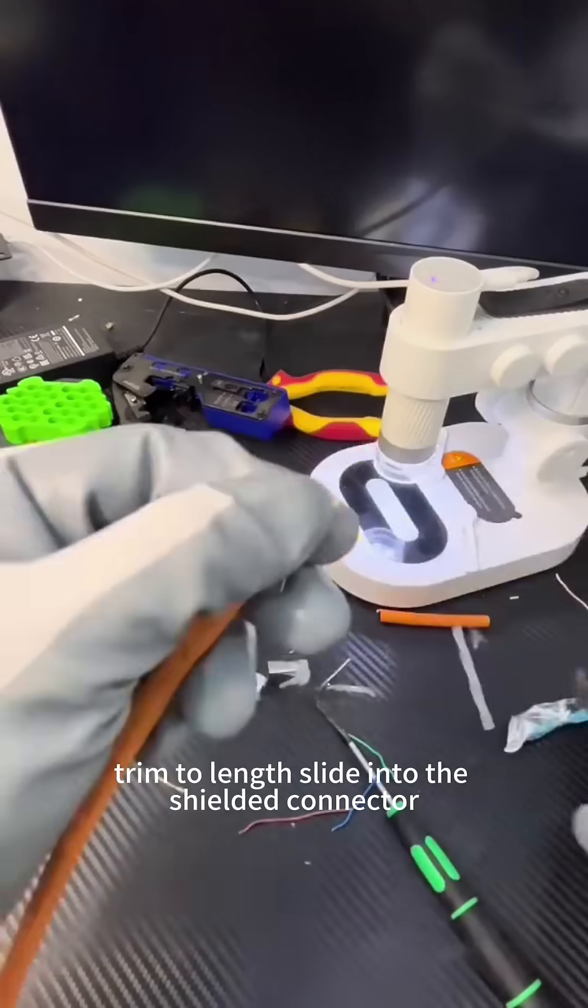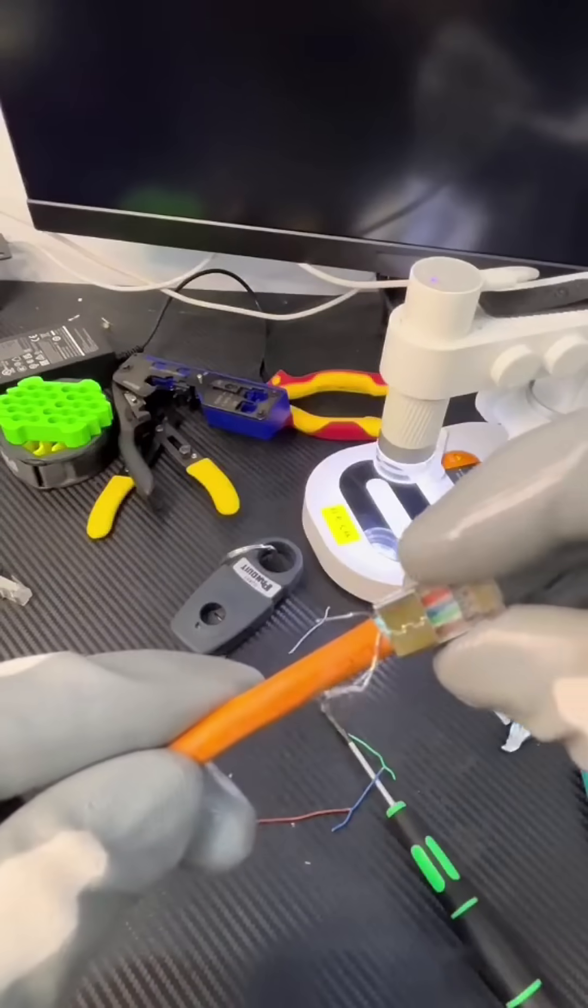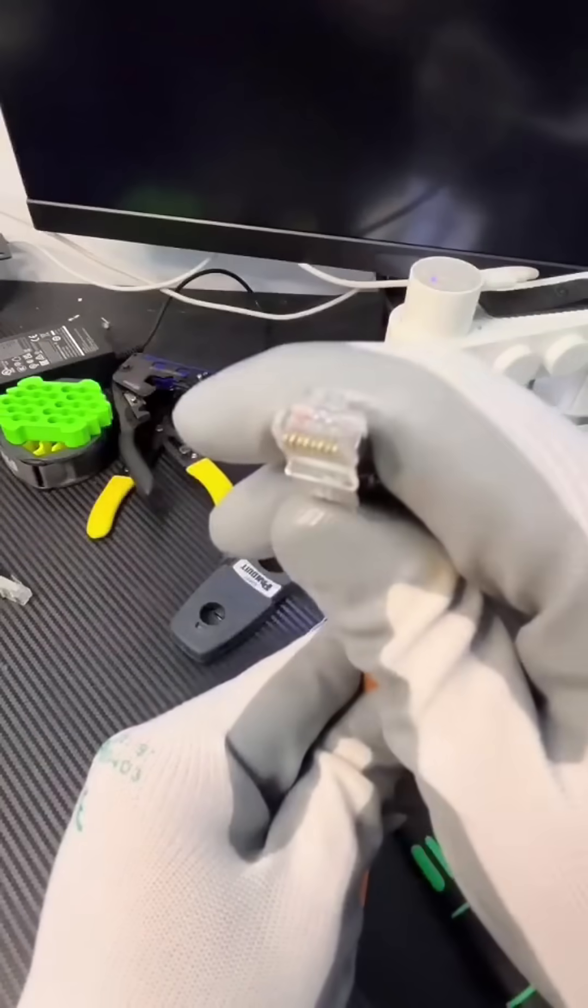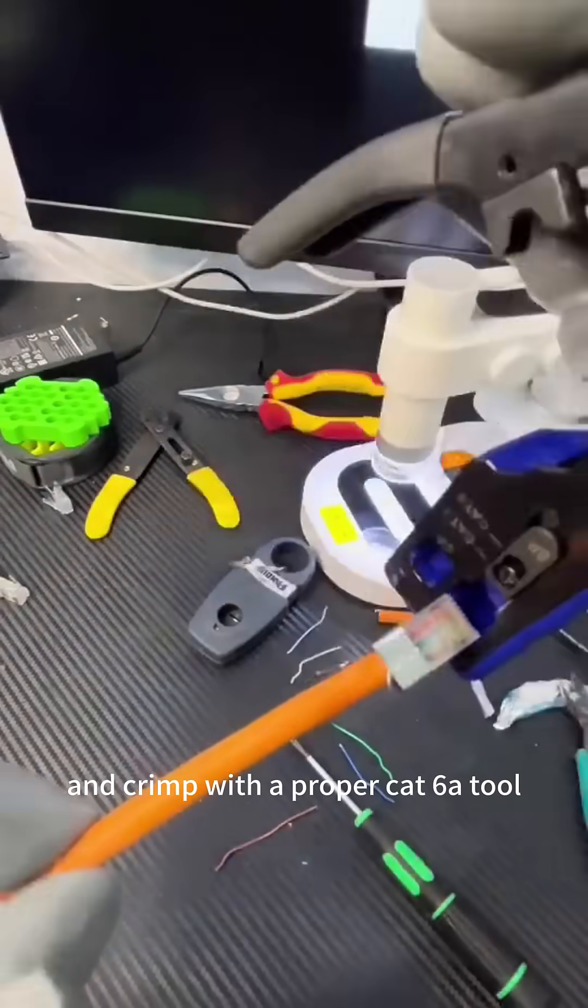Trim to length, slide into the shielded connector, and crimp with a proper CAT 6A tool.